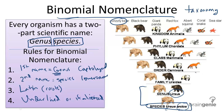As for humans, our genus name is Homo, capitalized, and our species name is sapiens.